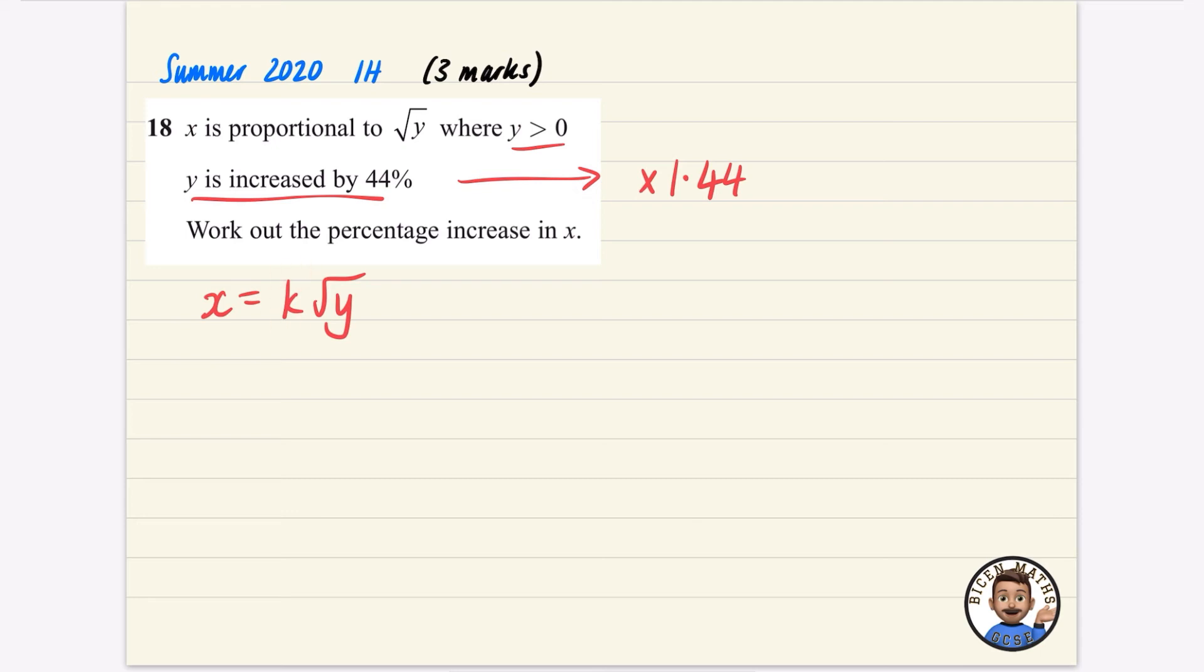To increase Y by 44%, we would say that it is Y multiplied by 1.44, which is 1.44Y. So I'm going to actually use this formula. And I'm now going to say, okay, well, X is equal to K multiplied by, I'm changing it and saying that it's 1.44Y.